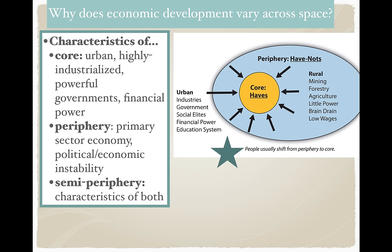The characteristics of the core are not difficult because they reflect much of our class discussion. Core countries are urban, highly industrialized, have powerful governments, financial power, and strong education systems. The periphery is where most people work in the primary sector of the economy — rural, mining, forestry, agriculture. Very little political power, very little military power, little economic power. These countries often experience brain drain — people leave and do not come back to further develop the country — and economically, people are earning pretty low wages.